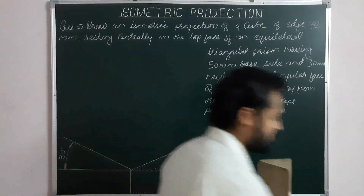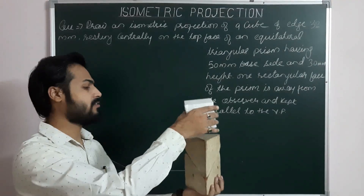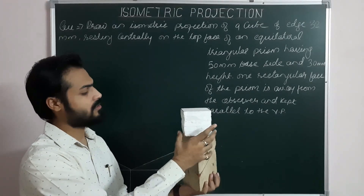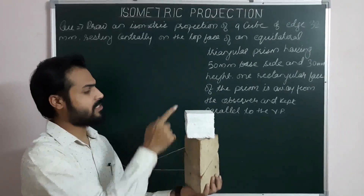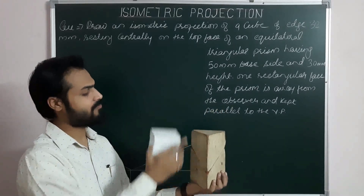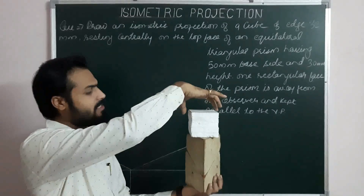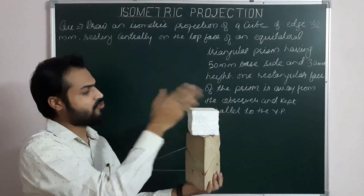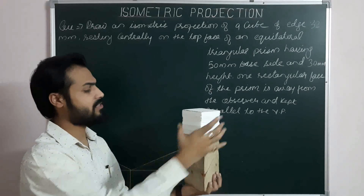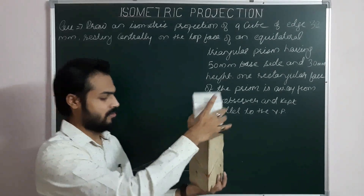The same rectangular face is away from the observer. Now the second solid is the cube, and that cube is resting on its top face. Two things to note: first, the common axis is the vertical axis — the vertical axis of the cube and the solid axis of the prism coincide. Second, nothing is given about the cube's orientation relative to the VP, so we will simply assume the cube is resting in the default position. This will be the final combination.